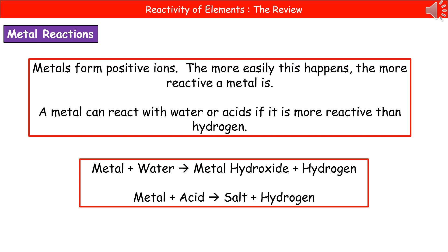Welcome to our review on the reactivity of elements. The first thing we need to consider is what's actually happening when a metal reacts. When metals react, they form positive ions, so they've got a positive charge. The more easily they form that ion, the more reactive the metal actually is, which is something we've looked at when we've looked at group one.